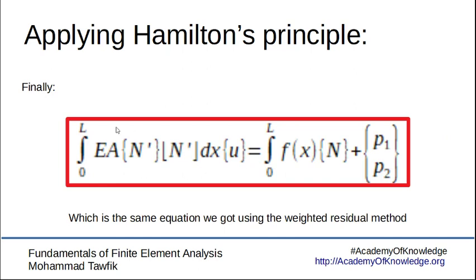Setting the bracket to zero gives us the equation of motion we were looking for. Investigating this equation, we find that one term represents our stiffness matrix — exactly the same as obtained from the weighted residual method — while another term represents the generalized force due to the distributed forces, and another is the vector from the end forces applied on the bar. Yes, we got the same model, but now we have a new tool. We don't even need a differential equation to get the finite element model — we can start from the energy terms of any problem and derive the finite element model directly.